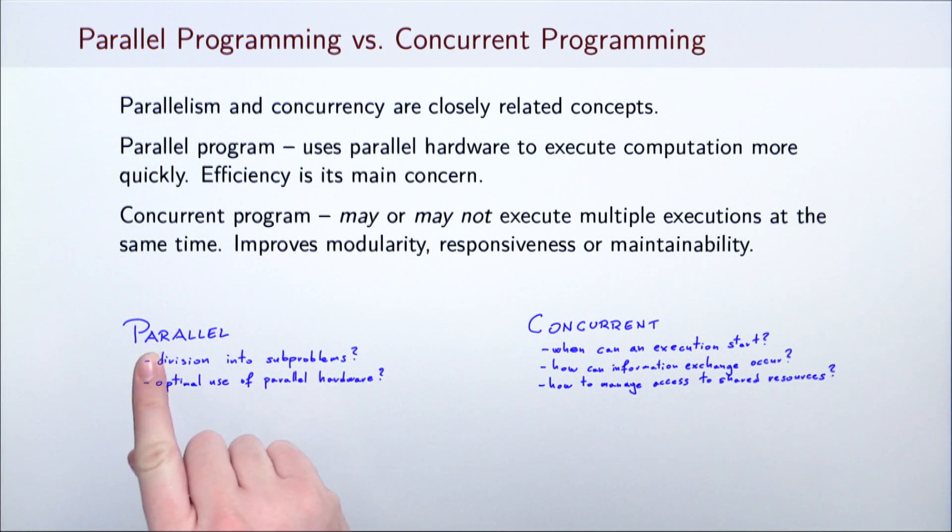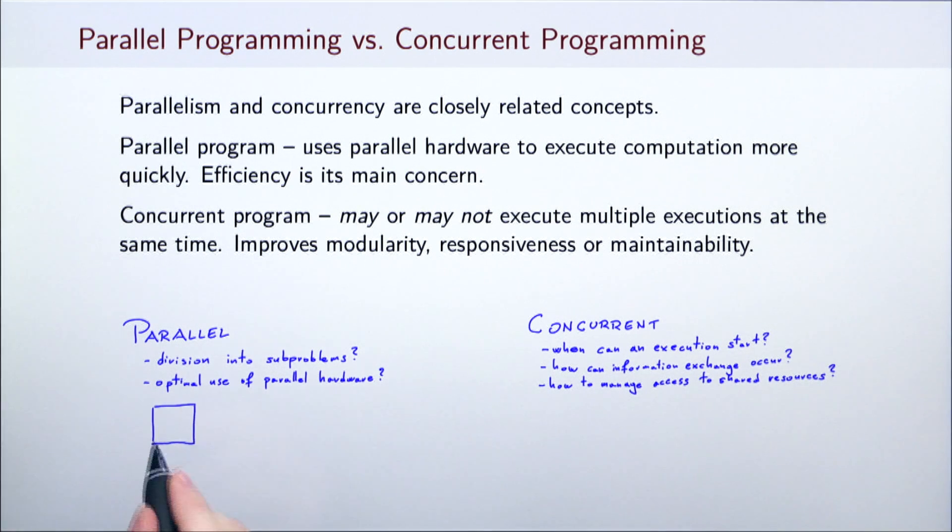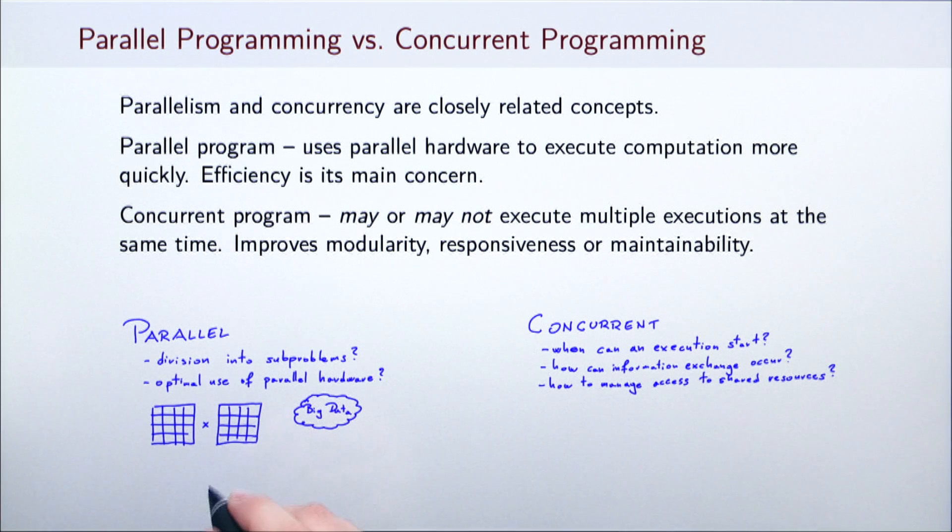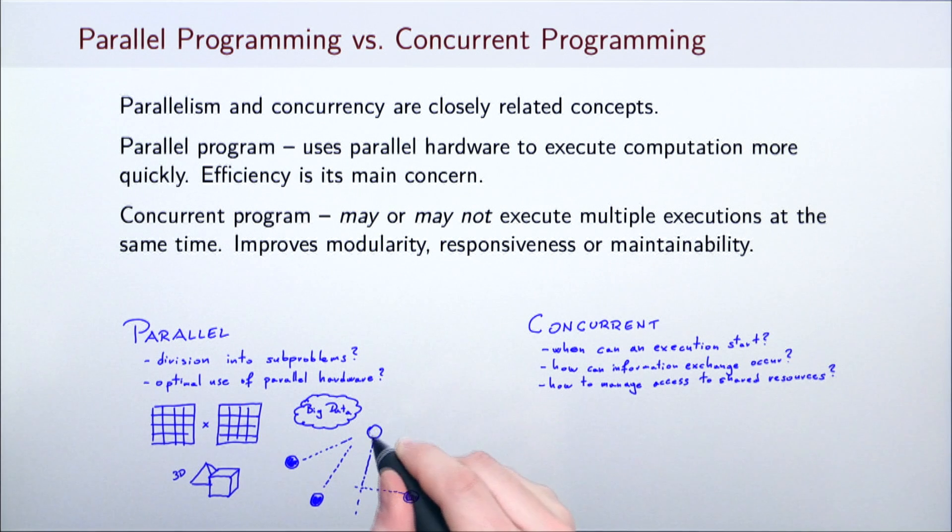Parallel programming is mainly concerned with algorithmic problems, numerical computations, or big data applications. Examples of such applications include matrix multiplication, data processing, computer graphics rendering, or simulation of fluid movement.